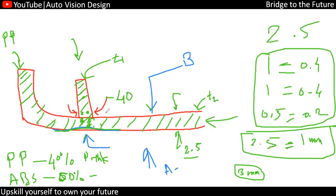So root thickness is 40 to 60 percent depending on the material. Next is draft angle — we already know that for the B-side surface we require a minimum 0.5 degree draft for easy removal of the part from the mold. Then we consider height, which is another most important parameter for ribs.